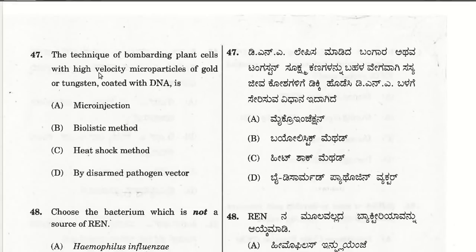The forty-seventh question: the technique of bombarding plant cells with high-velocity microparticles of gold or tungsten coated with DNA is called the biolistic method.